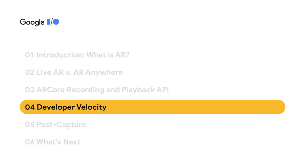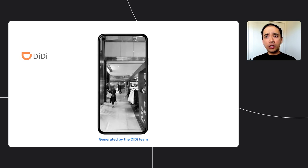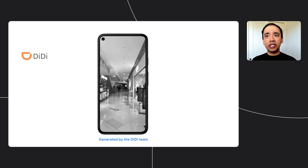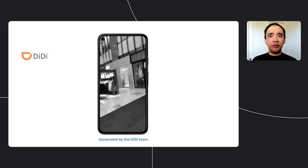Now we're going to dive into both the developer and user-facing benefits of using recording and playback. The Recording and Playback API removes time and space constraints for developers. You can now record a video using ARCore and then play it back using any compatible device. Building an experience in a shopping mall? There's no need to go to the mall every time you want to test a change — simply record your visit once, and then iterate and develop from the comfort of your own desk.